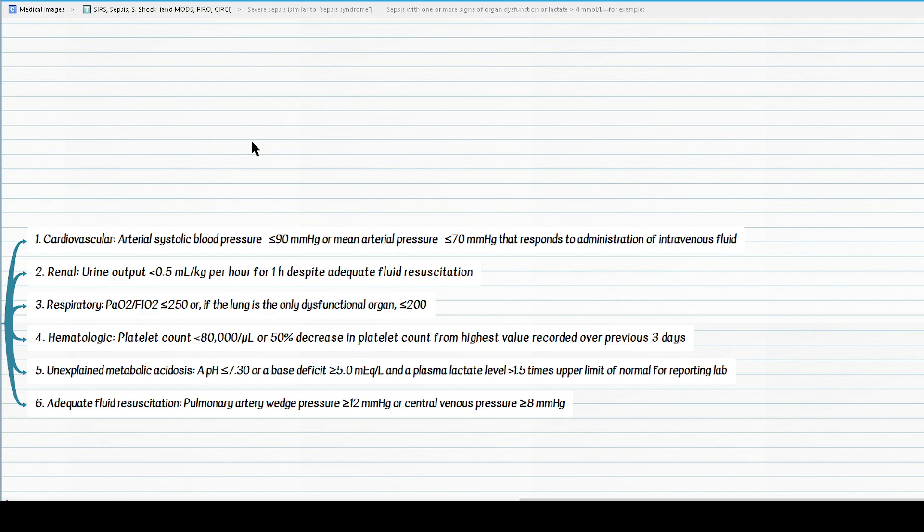One final question regarding adequacy of fluid resuscitation. I initially mentioned that definition of fluid resuscitation is 30 ml per kg of crystalloid fluid commonly delivered in a bolus within three hours, but how do we measure the adequate response to fluid resuscitation clinically? We measure the pulmonary arterial wedge pressure or central venous pressure.